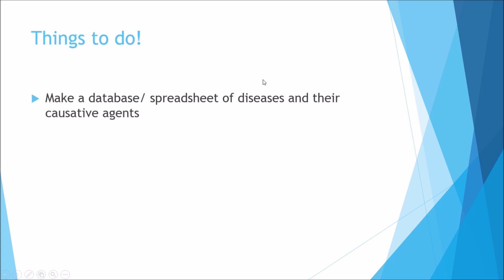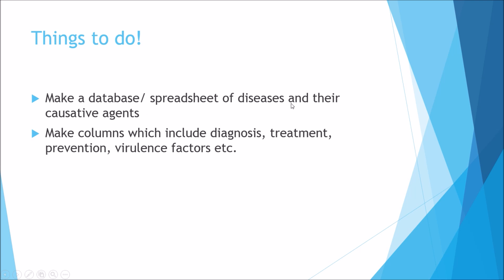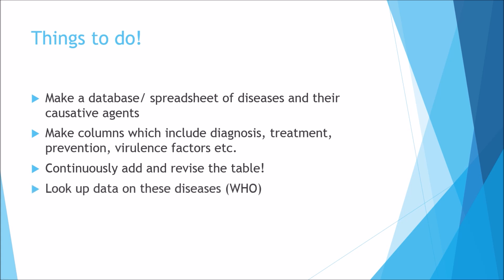A few study tips to consider: make sure you create a database or spreadsheet of diseases and their causative agents. When revising for exams, include columns for diagnosis, treatment, prevention, virulence factors, and so on. Continuously add to this database over time — you can go from these four bacteria all the way up to maybe 40 or more, depending on your exams. If you want to look up data about pandemics or endemics, I recommend the World Health Organisation, which always posts up-to-date information on disease distribution.